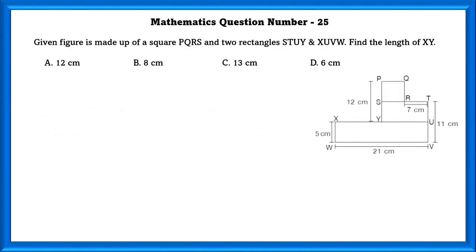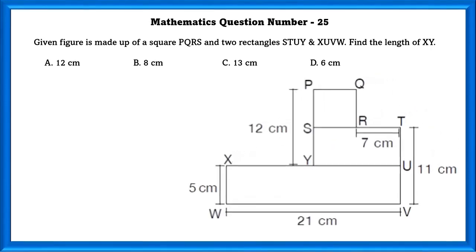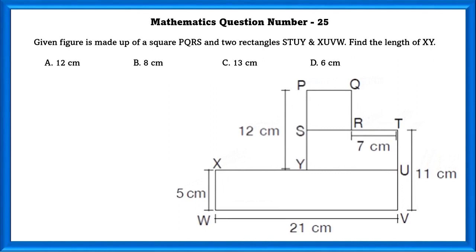Mathematics question number 25. Given figures made up of square PQRS and two rectangles STUY and XUBW. Find the length of XY. In order to find the value of XY, first we need to find the missing values. Here 11 minus 5 is equal to 6. Since this is a rectangle, opposite sides are equal, so this side is also 6. Using this we can find the top part of the square, that is also 6 centimeters.